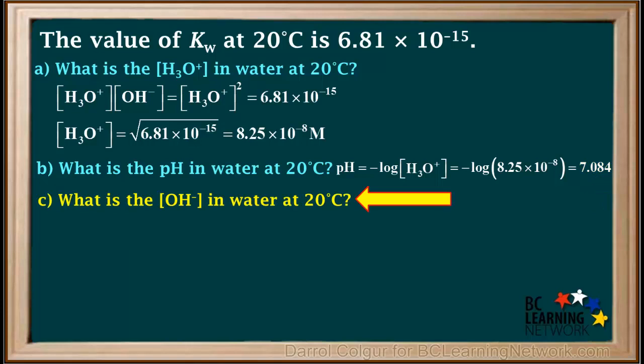Question C asks for the hydroxide ion concentration in water at 20 degrees. We know that the hydronium ion concentration is 8.25 times 10 to the negative 8th molar, and we need to find the hydroxide ion concentration.